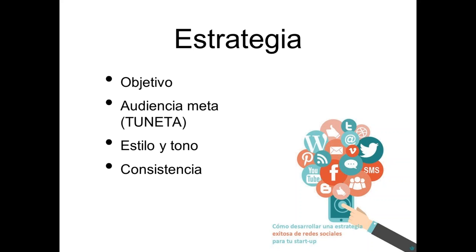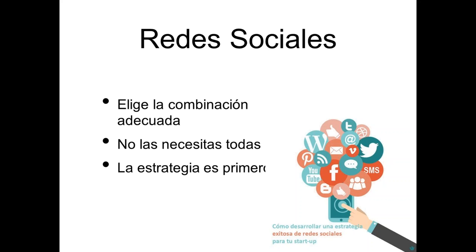El siguiente punto es la consistencia. En nuestra estrategia, para eso nos sirve: para poder tener una congruencia y una estabilidad en nuestros mensajes. No podemos enviar un mensaje que contradiga nuestros ideales, los valores de su organización o de su startup. Hay que estar muy conscientes de que esto lleva a una narrativa. Vamos a hablar más adelante del tema de narrativa cuando veamos contenido.